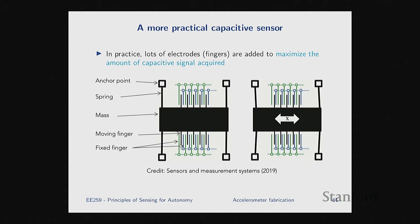This is a 1D case. In silicon, you have some anchor points, then you generate springs — I'm just showing them as lines but these are really spring patterns. Then you have your proof mass, in this case moving in the X direction, and then your capacitive electrodes pick up the signal.